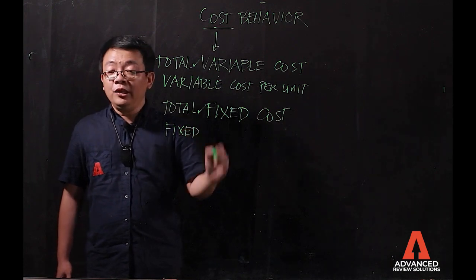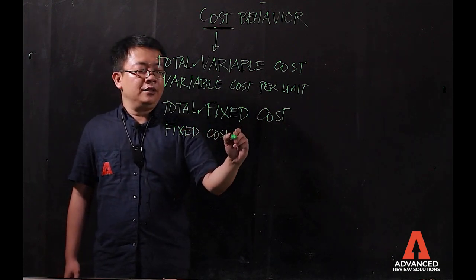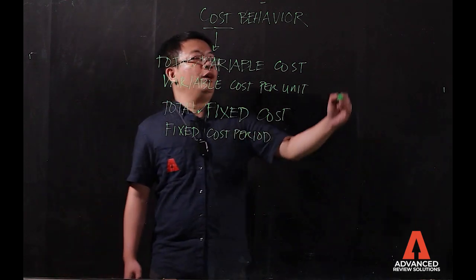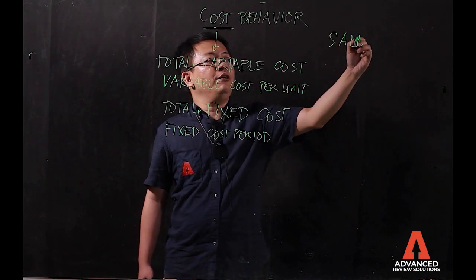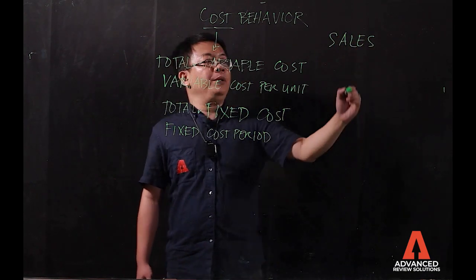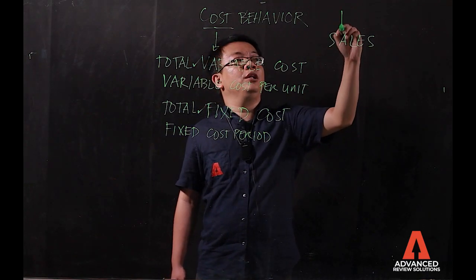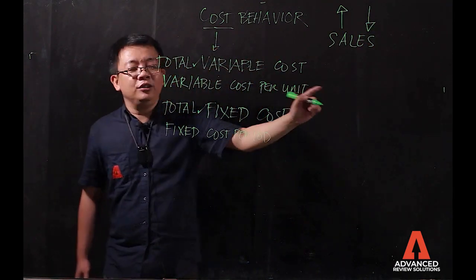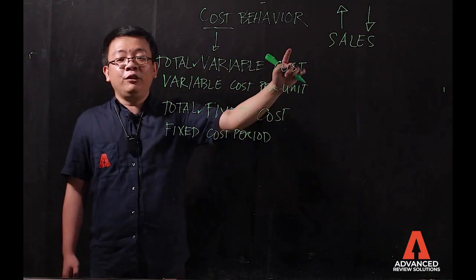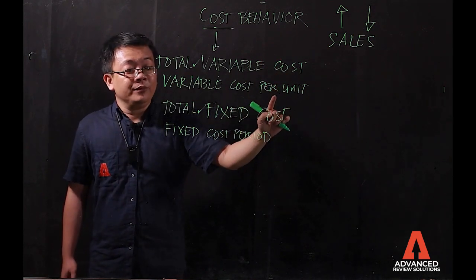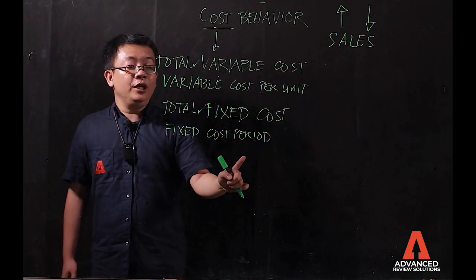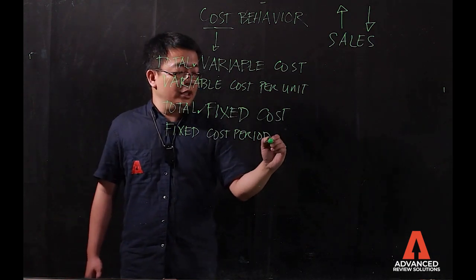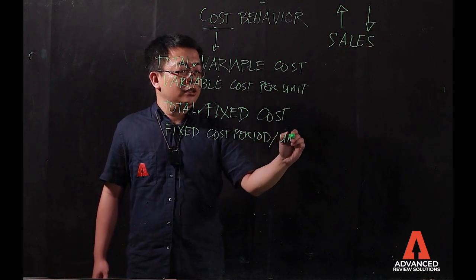Why fixed cost per unit? Because later, there's a condition wherein you have your sales. What will happen if your sales will go up? What will happen if your sales will go down? That's the main condition in terms of your total variable cost, variable cost per unit, total fixed cost, and your fixed cost per unit.